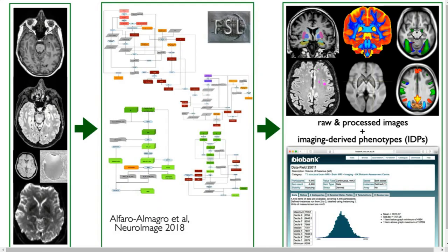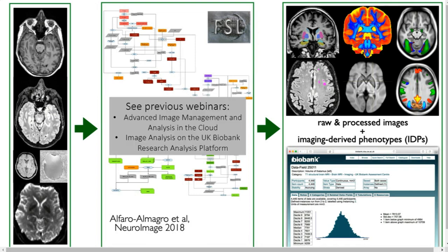The images are processed with the UK Biobank pipeline — there are dedicated webinars on this with links in the chat. The output of the pipeline is processed images that highlight different characteristics of the brain, along with imaging-derived phenotypes (IDPs): summary measures describing brain characteristics. Currently, the pipeline already extracts around 4,000 IDPs per subject — a huge amount of information about the brain.